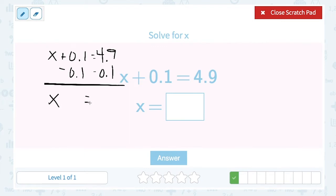Subtract leaves us with just x. Bring down my equal sign. 9 minus 1 is 8, bring down my decimal. 4 minus 0 is 4, so it's 4.8.